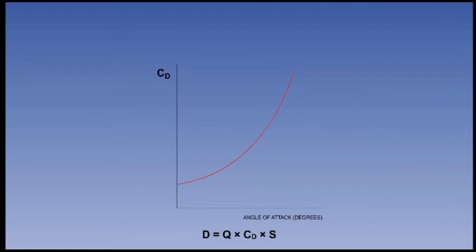If the CD of the representative wing were to be plotted against the angle of attack alpha, the result would be typically the curve as shown on the screen. At low alpha, CD is low and changes of alpha produce only small changes in CD.